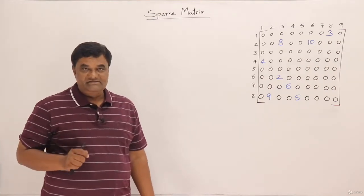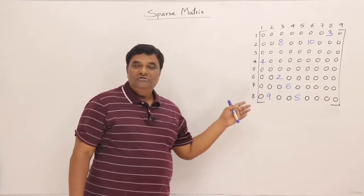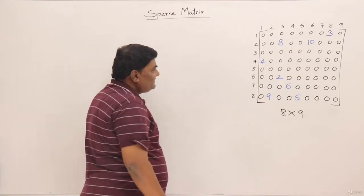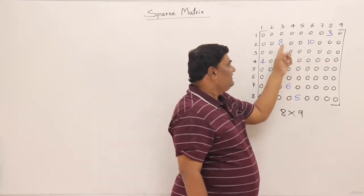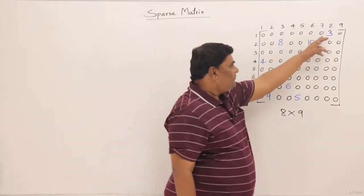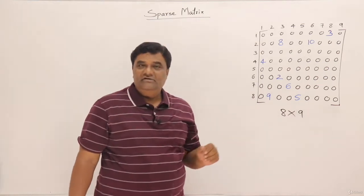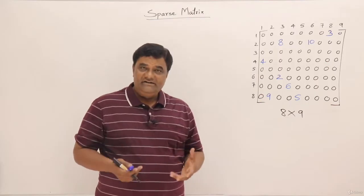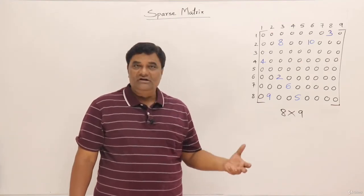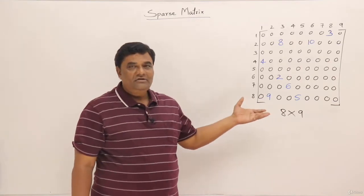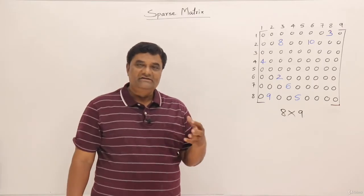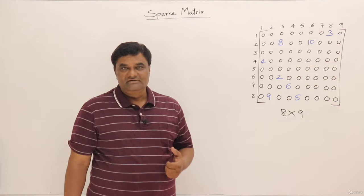Our next topic is sparse matrix — a matrix in which there are more zero elements. I have an example matrix of order 8 by 9, and you can see it has very few nonzero elements like 3, 8, 10, 4, 2, 6, 5, and 9 — only 8 nonzero elements. This commonly occurs in statistical or survey data. If we store a sparse matrix directly, we waste space and processing time, so we want to store it in less space with less processing.